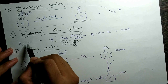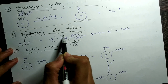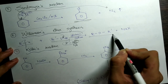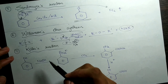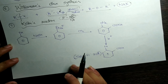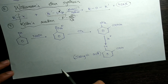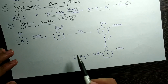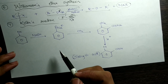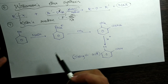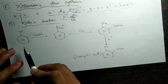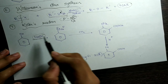In the Sandmeyer's reaction we have a benzene ring with N₂⁺ and Cl⁻, and we make it react with CuCl₂ in the presence of HCl. The N₂ molecule takes up the bond pair of electrons and leaves as N₂ gas. We are left with a positive charge on the benzene ring, and the Cl⁻ attaches to give a haloarene. This is a preparation method of chlorobenzene. This compound is called chlorobenzene.